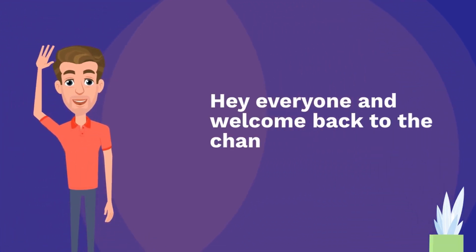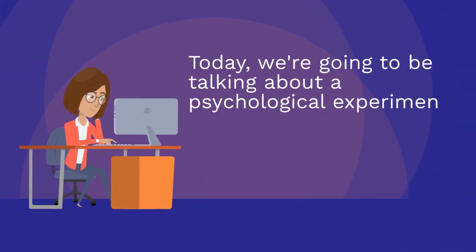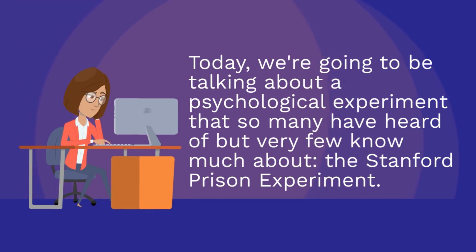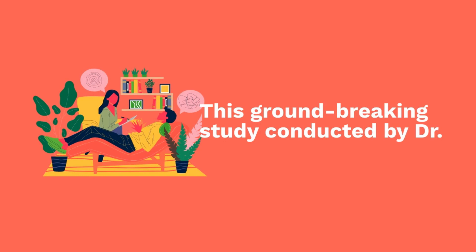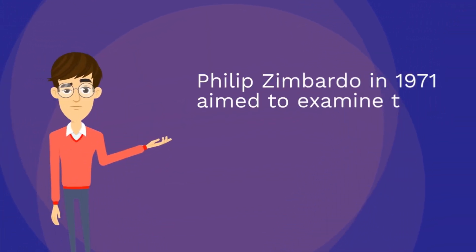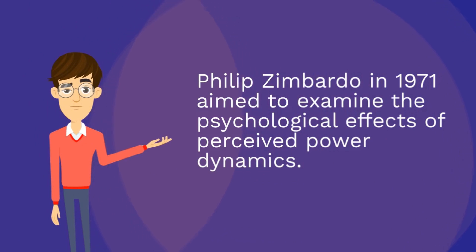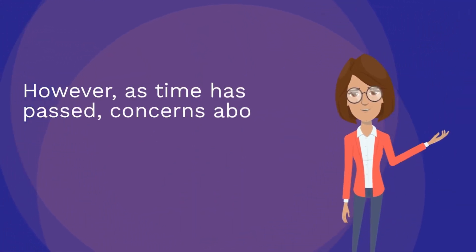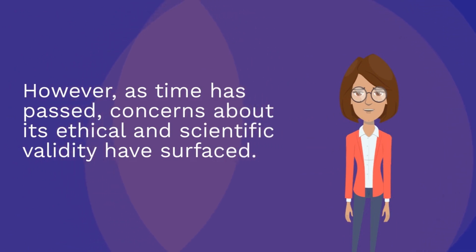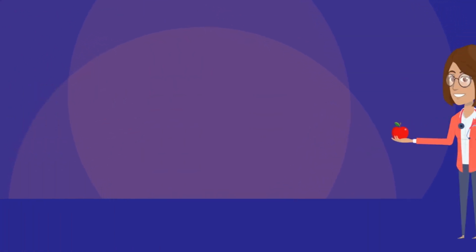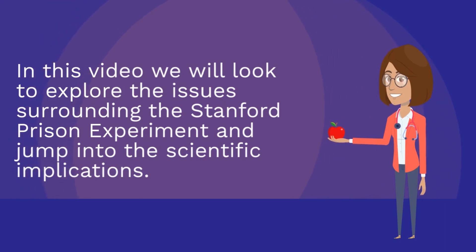Hey everyone and welcome back to the channel. Today we're going to be talking about a psychological experiment that so many have heard of but very few know much about: the Stanford Prison Experiment. This groundbreaking study, conducted by Dr. Philip Zimbardo in 1971, aimed to examine the psychological effects of perceived power dynamics. However, as time has passed, concerns about its ethical and scientific validity have surfaced. In this video we will explore the issues surrounding the Stanford Prison Experiment and its scientific implications.